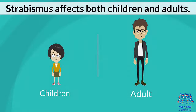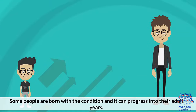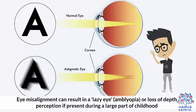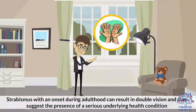Strabismus affects both children and adults. Some people are born with the condition and it can progress into their adult years. Eye misalignment can result in a lazy eye, amblyopia, or loss of depth perception if present during a large part of childhood. Strabismus with an onset during adulthood can result in double vision and may suggest the presence of a serious underlying health condition.